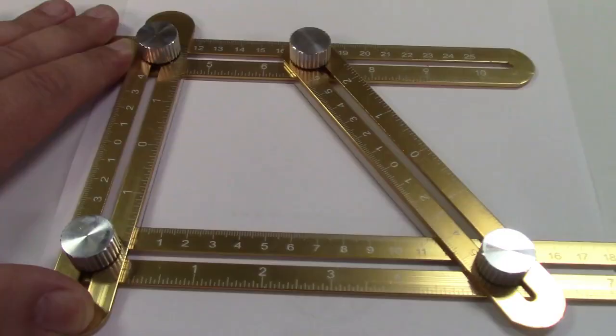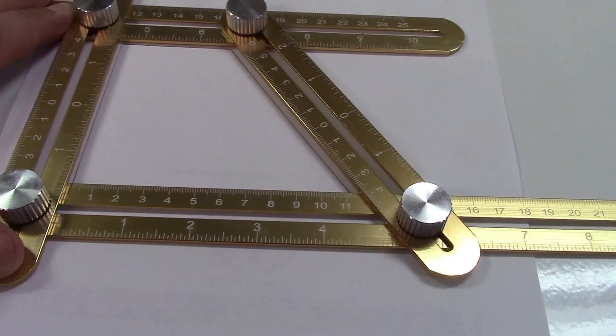Once you get your angle, you can also trace it onto a sheet of paper or, of course, a piece of lumber, and you'd be left with that exact shape.